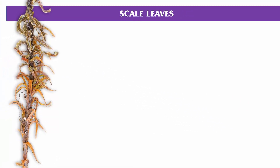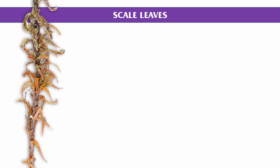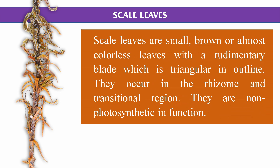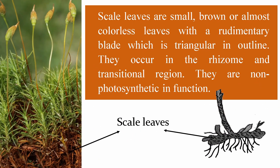The scale leaves are small, brown or almost colorless leaves with a rudimentary blade which is triangular in outline. They occur in the rhizome and the transitional region, arranged in three vertical rows with a divergence of 1/3 — that is three leaves in one complete spiral. The scale leaves are non-photosynthetic in function.